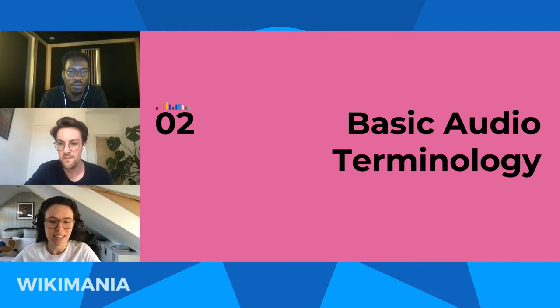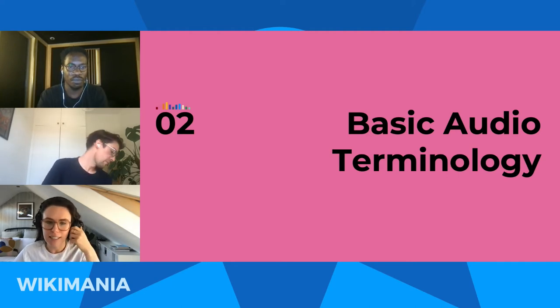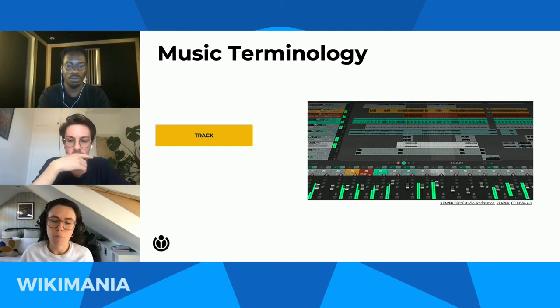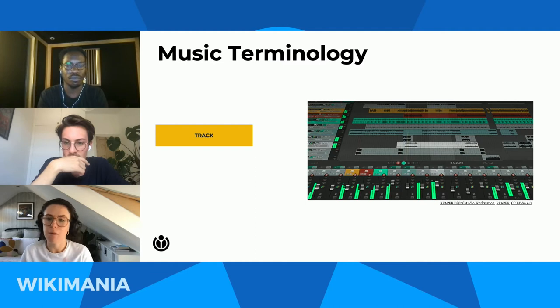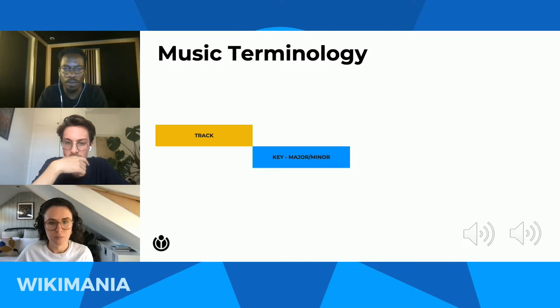Let's get into the presentation. First, we'll go through some basic audio terminology — musical language terms that are useful for you whilst entering the contest. The first thing is 'track': a track is essentially a long-form piece of music, anything from a one-minute pop song to a symphony or an opera. Sound logos, which we're looking at today, are much much shorter — usually just between one and four seconds long.